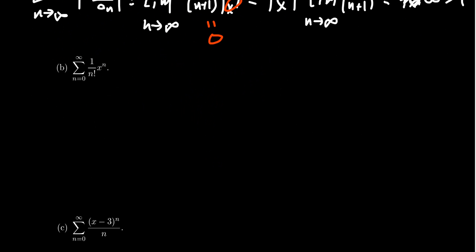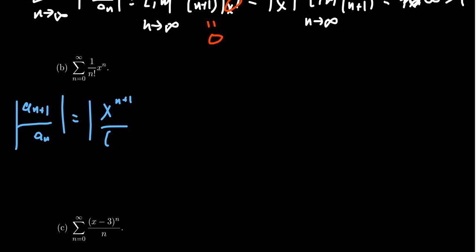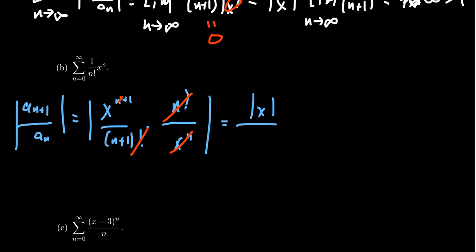Looking at a similar example: take the sum from N equals 0 to infinity of (1 over N factorial) times X to the N. We look at the limit of the ratio A_(N+1) over A_N. With N factorial now in the denominator, this looks like X to the (N+1) over (N+1) factorial, times N factorial over X to the N. The X to the N cancels and the N factorial cancels, leaving just the absolute value of X over (N+1).